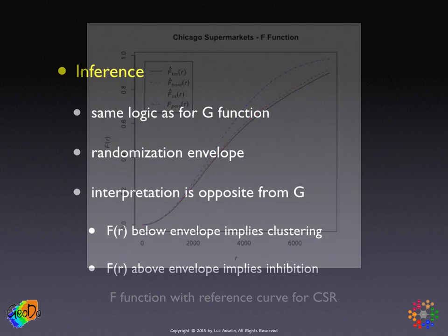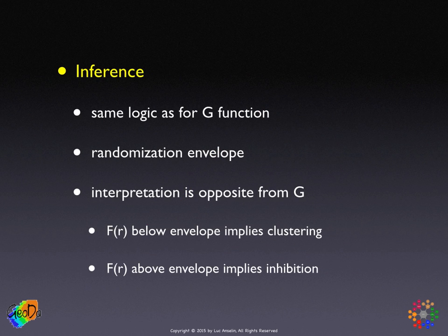For inference, the same logic as before: we generate random point patterns, and for every one of these random point patterns, we construct an F function. For every distance, we sort the values and take the minimum and the maximum, which allows us to construct a randomization envelope.